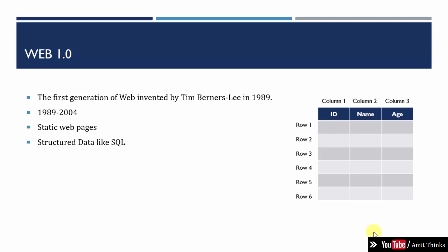At that time, SQL was used to manage all data by creating simple rows and columns — that is, the relational model. This era lasted from 1989 to 2004. All data was stored in the form of tables with rows and columns, because there was no social media data, no surveillance data, or anything like that.